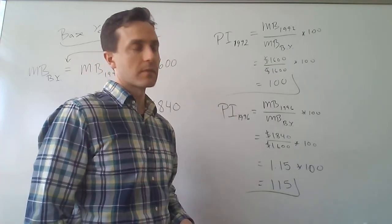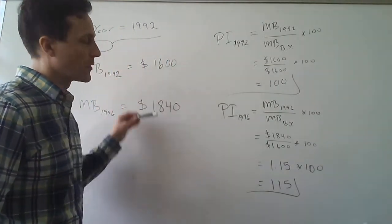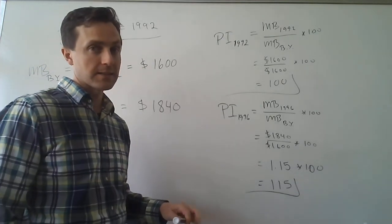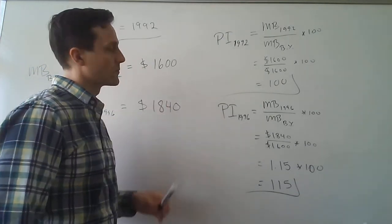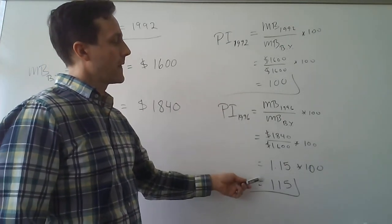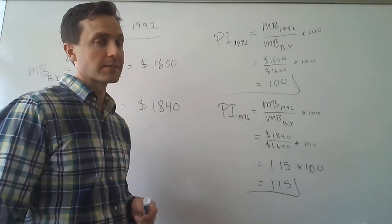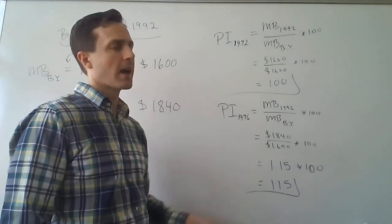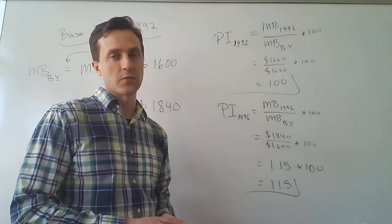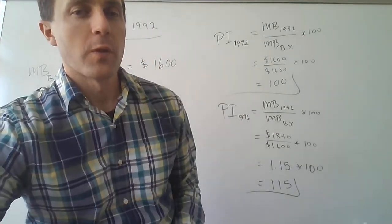This makes sense because if the value of the market basket went up from 1992 to 1996, and assuming the market basket didn't change, that means the overall aggregate level of prices must have gone up. So the value of the price index in this year should be higher than 100 — greater than the value of the price index for the base year. That answer makes sense. Thank you for watching.